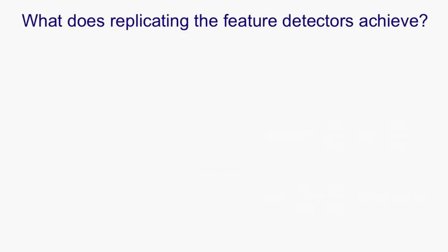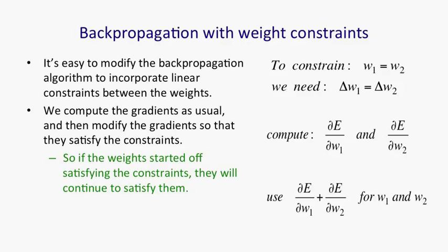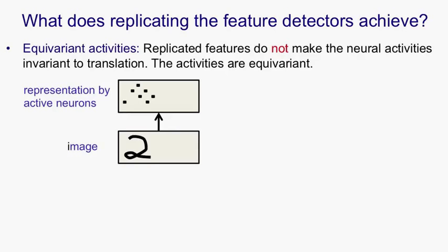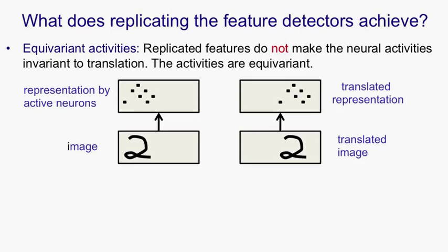There's quite a lot of confusion in the literature about what replicated feature detectors are actually achieving. Many people claim they're achieving translation invariance, and that's not true. Well, at least it's not true in the activities of the neurons. So if you look at the activities, what replicated features achieve is equivariance, not invariance. An example should make that clear. Here's an image, and the black dots are the activated neurons. Here's a translated image, and notice the black dots have also translated. So the image changed, and the representation also changed by just as much as the image. That's equivariance, not invariance.